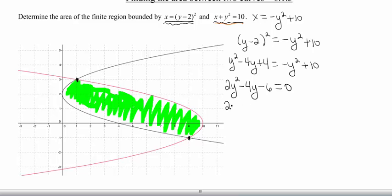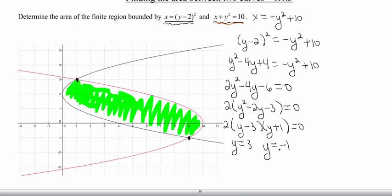I notice that all three of my terms have a 2 in common, so let me go ahead and factor that out. And then now I've got a polynomial left that I can go ahead and factor. So that's going to factor into y minus 3 and y plus 1. And then now I can set each factor equal to 0, and I get my two intersection points, this time in terms of y.